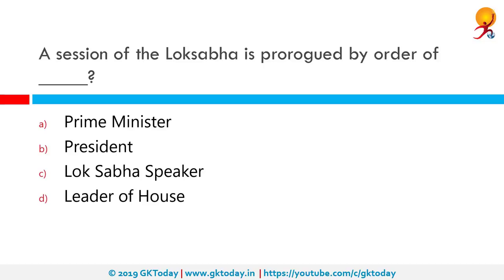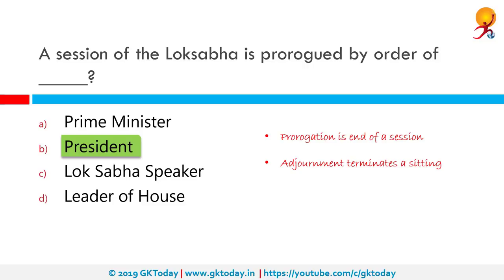A session of the Lok Sabha is prorogued by the order of the President. Prorogation is the end of a session — a prorogation puts an end to a session and the time between prorogation and reassembly is called recess. Prorogation is the end of session, not dissolution of the house. While adjournment terminates a sitting, prorogation terminates a session. Dissolution terminates the Lok Sabha itself and requires fresh elections. While adjournment is done by the presiding officers — Speaker or Deputy Speaker in Lok Sabha, Chairman or Deputy Chairman in Rajya Sabha — prorogation and dissolution of Lok Sabha are both done by the President.